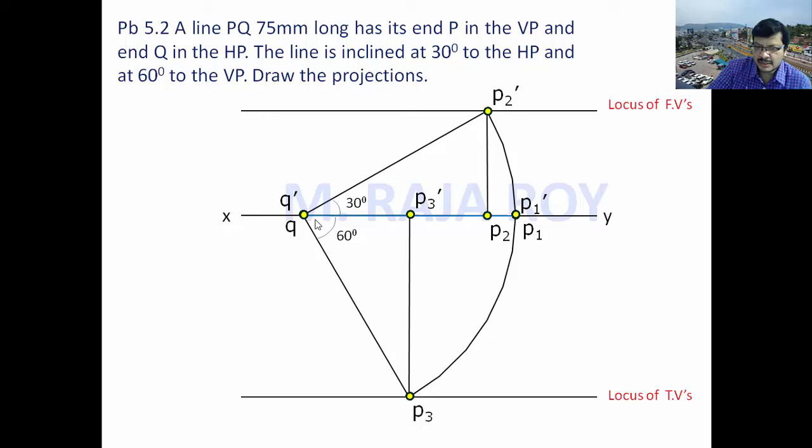Take Q' as center, Q' P3' as radius. Draw an arc like this. This is P'. Q' P' is the final front view.